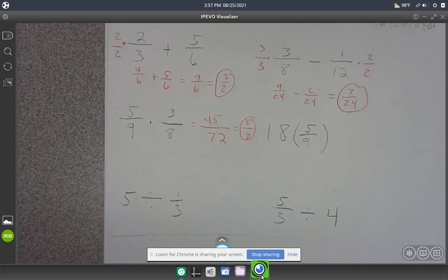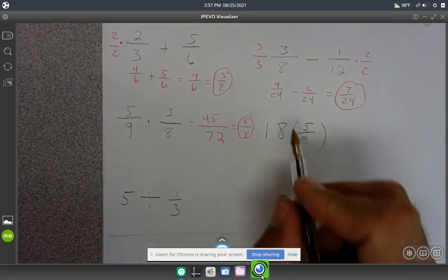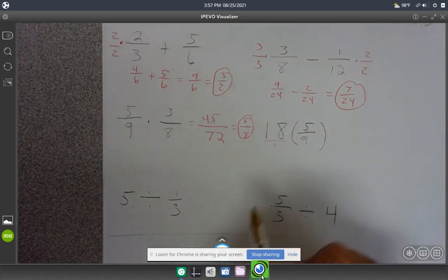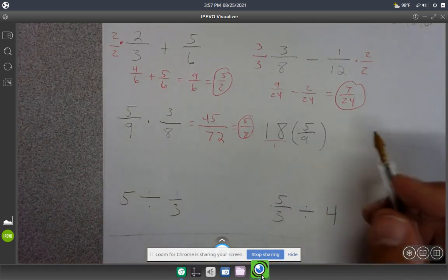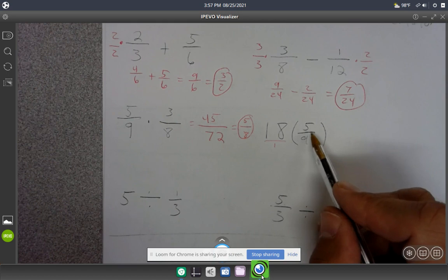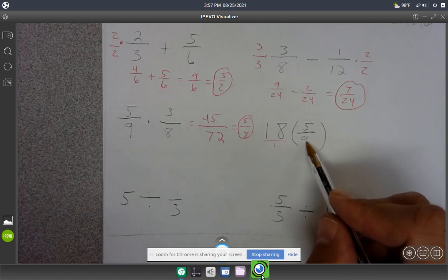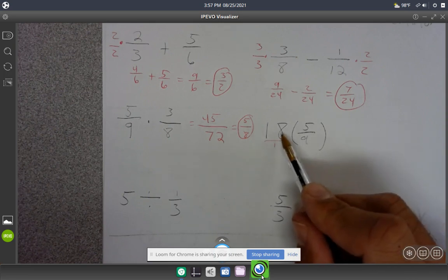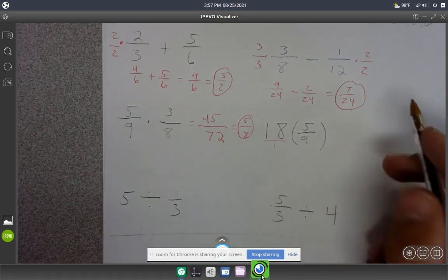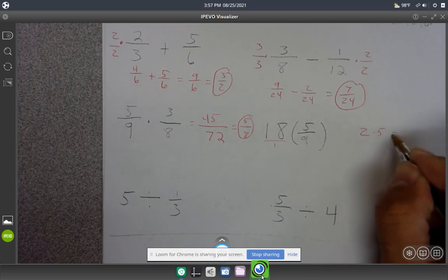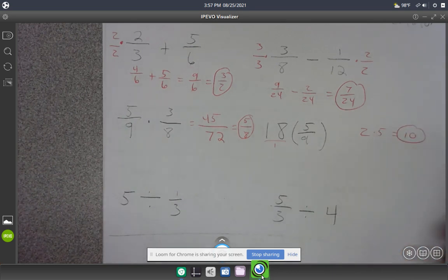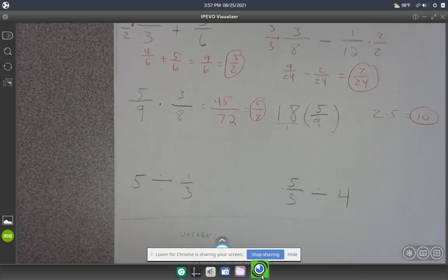For this one with 18, you could think of it as 18/1 and multiply straight across. What I'll do is divide 18 by the denominator 9, which is 2, then multiply by the numerator 5. That gives 10.